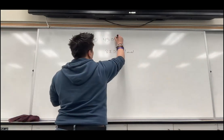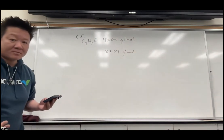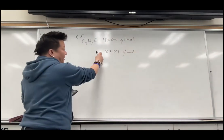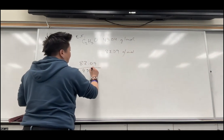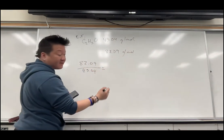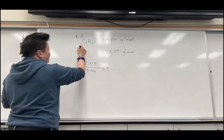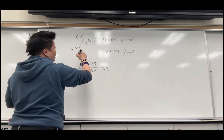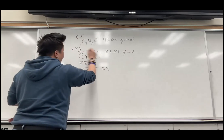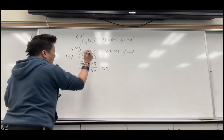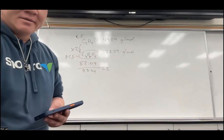The empirical mass comes out to 43.04 grams per mole. Now take the big mass divided by the small mass to get the factor — the factor is 2. So you multiply the empirical formula by 2, giving you C4H6O2 as your molecular formula.